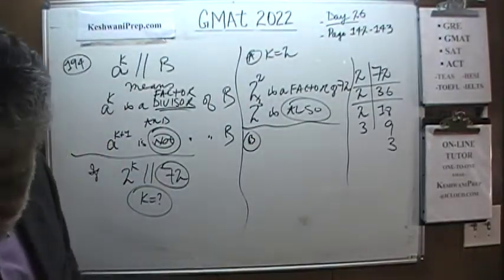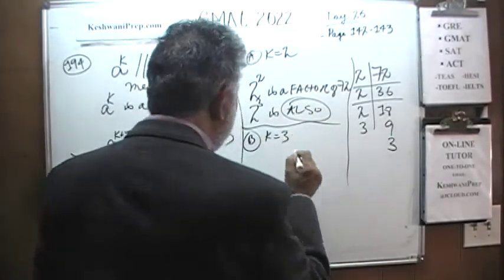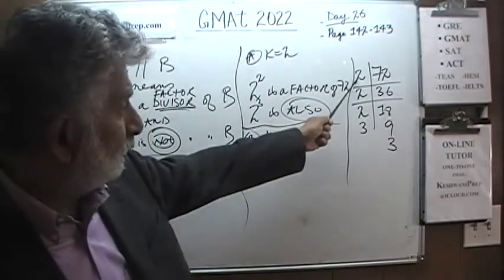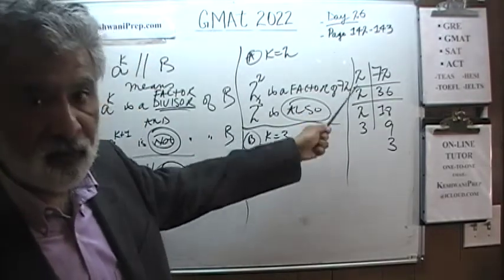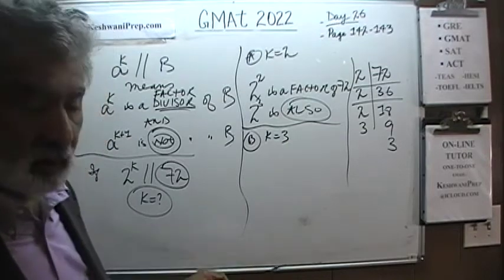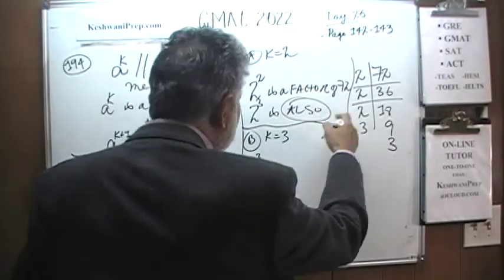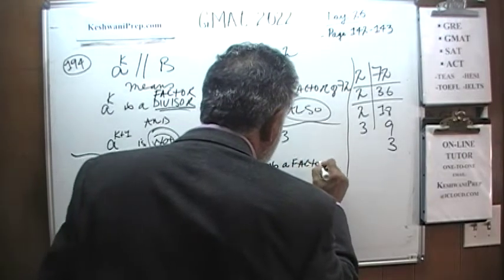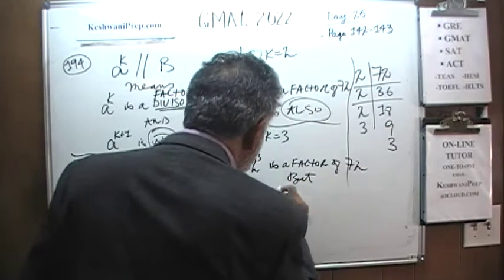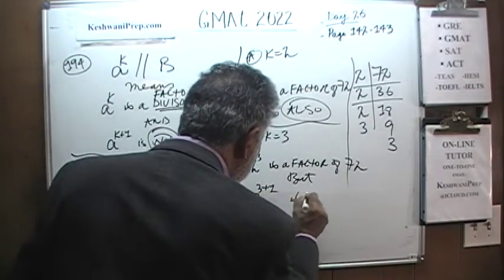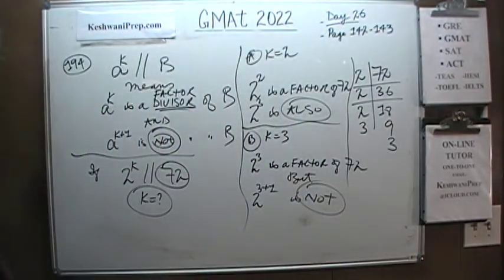Let's look at B: k equals 3. That would work, because we only have three 2s — 2 times 2 times 2. We do not have four factors of 2; it only has 3. That works because 2 raised to 3, which is 8, is a factor of 72. But 2 raised to 4, which is 16, is not a factor of 72. There you go — that's our answer.